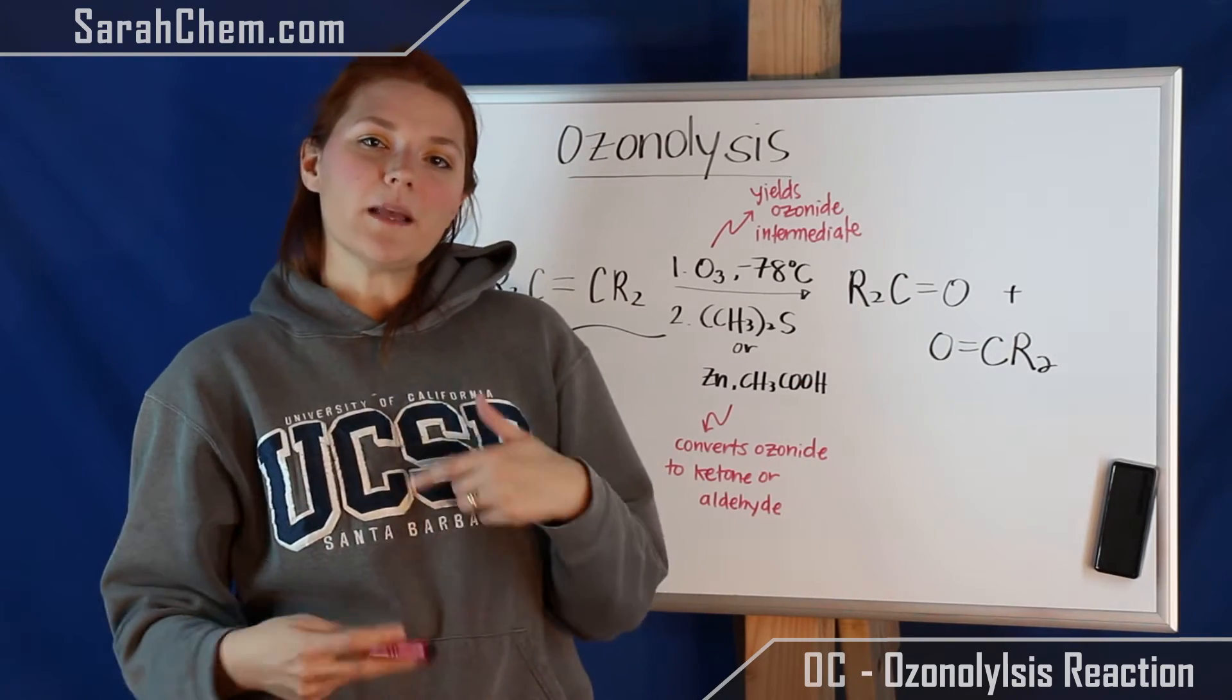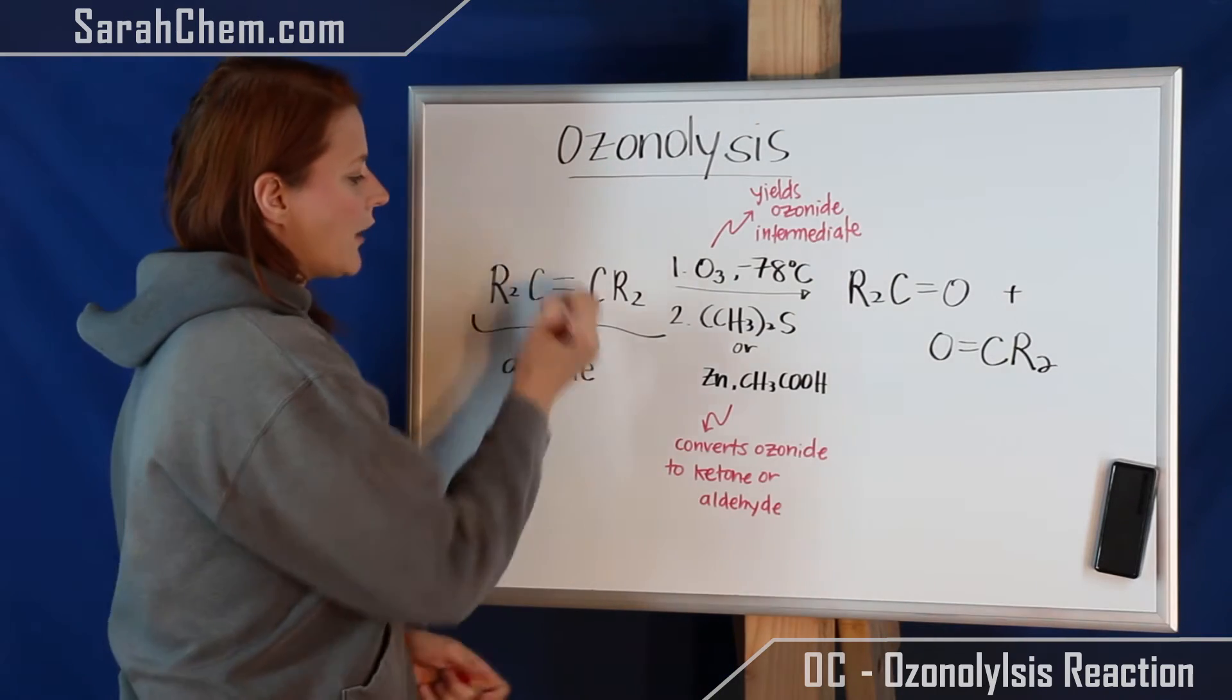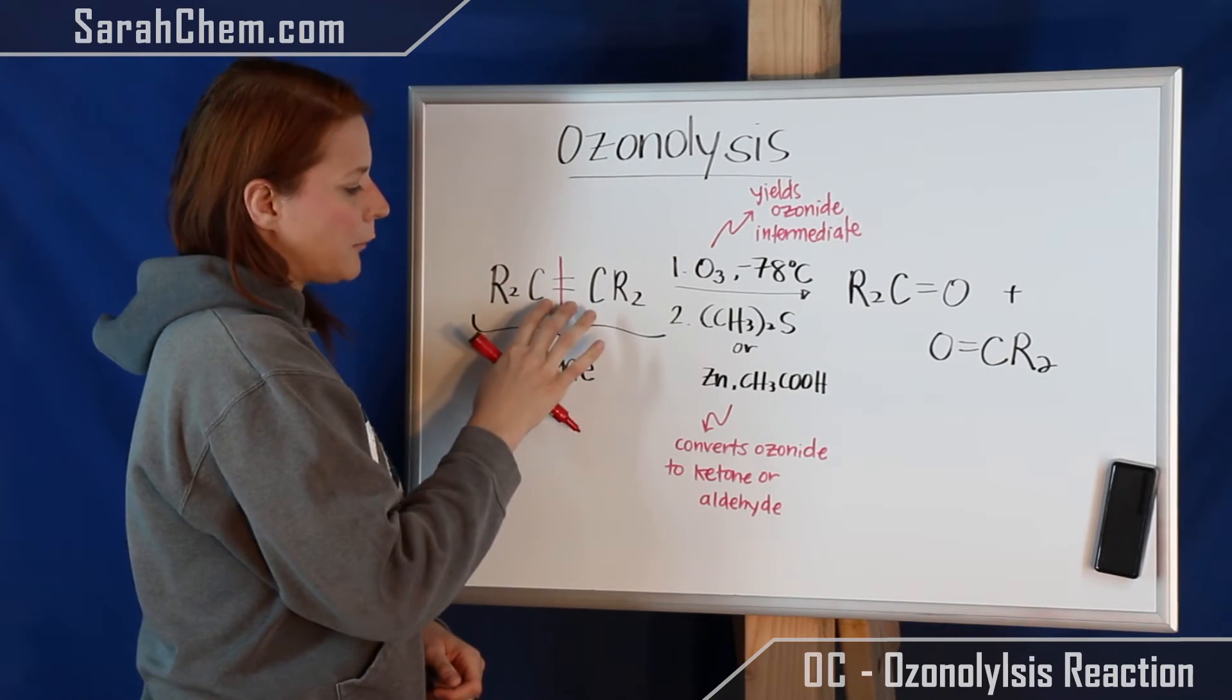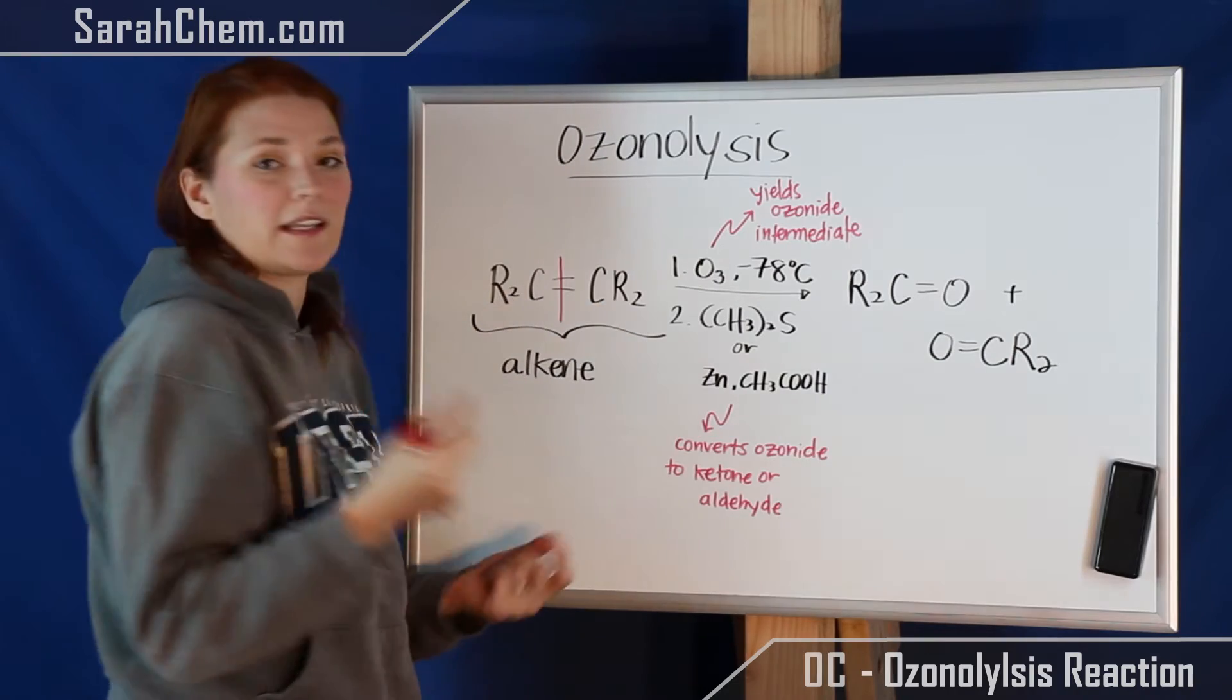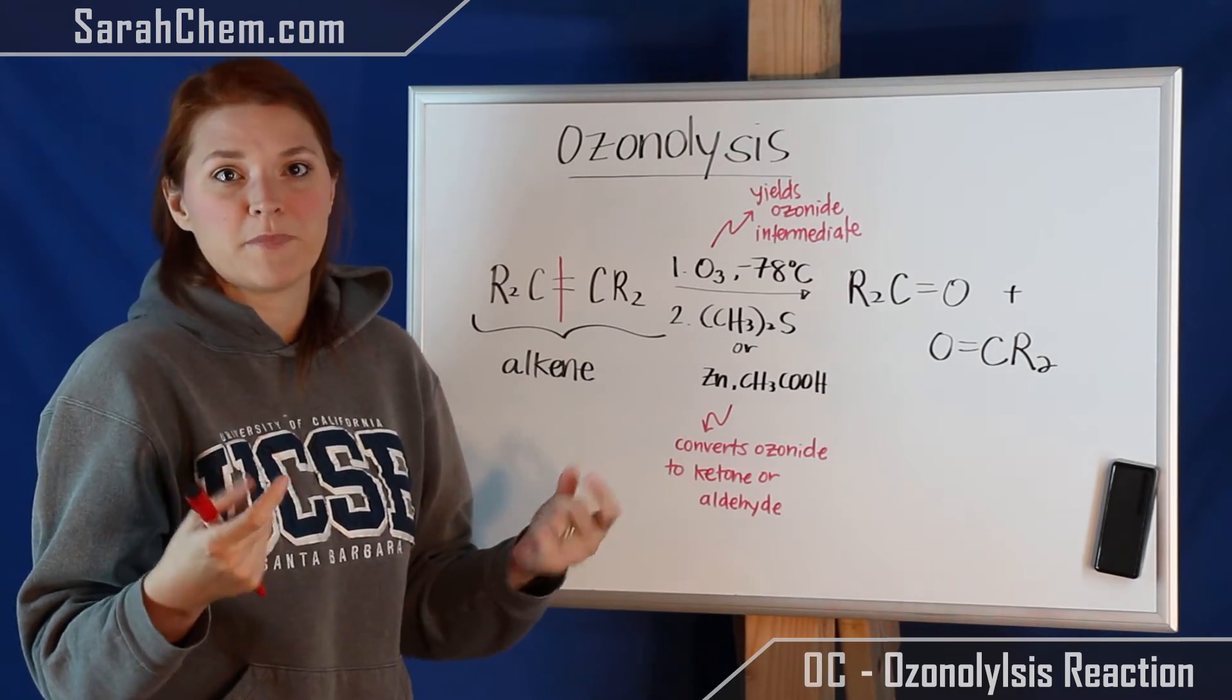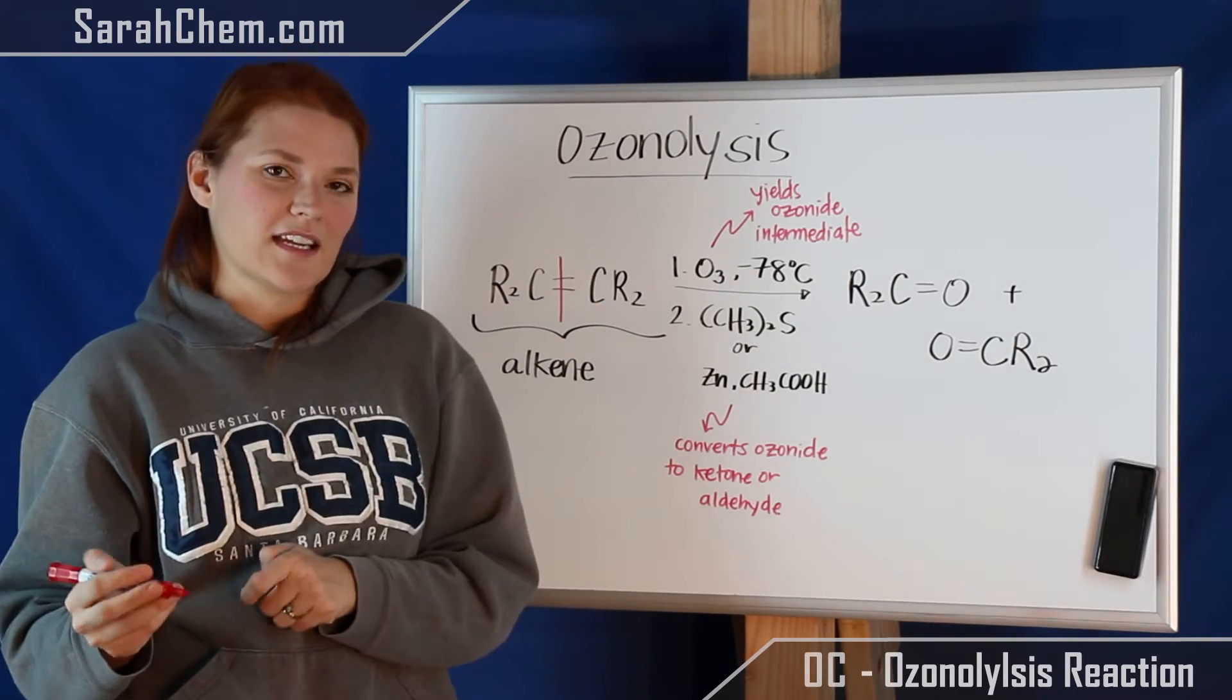Now when you're thinking about product predictions, essentially what you're going to be doing is you're basically going to cut down that double bond, and on either end you're going to cap an O on to the end of it. To see what I mean, let's take a look at an example.